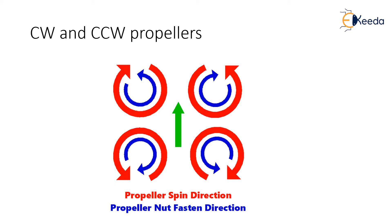Counterclockwise motors have normal threads, while clockwise motors have reverse threads as seen in the image. These days, many people just use counterclockwise motors and screw their prop nuts extra tight to avoid confusion. In some aspects, this can be beneficial because it makes manufacturing and buying a lot easier. However, you would only get the self-tightening effect of the prop nuts on two of the motors, not all of them. This is because as the motors spin in their set direction, their rotation keeps the prop nuts secured on, so the extra tightening of the nuts is not needed.